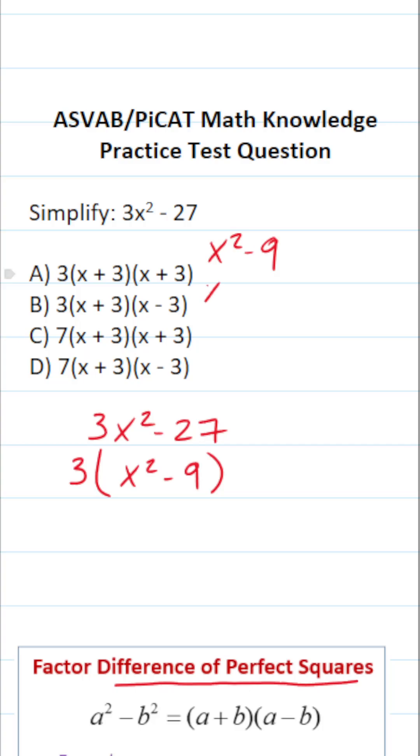In fact I can rewrite this to be x squared minus 3 squared. Again, 3 squared is 9. And the way you factor the difference of perfect squares is like this: it's going to be x plus 3 times x minus 3.